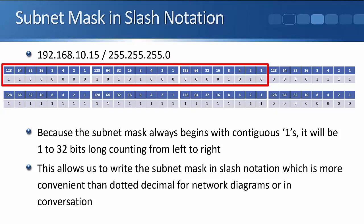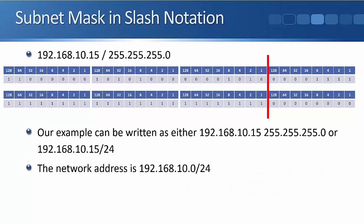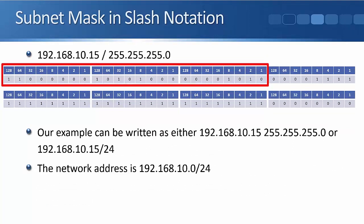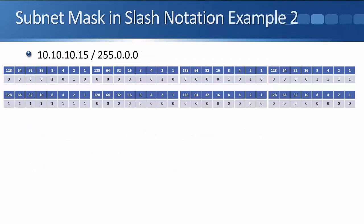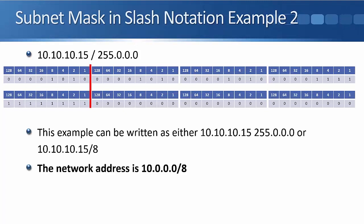The network portion for a slash 24 was highlighted. Now let's look at another example: for IP address 10.10.10.15 with subnet mask 255.0.0.0 — hopefully you can see just by looking at this that it's going to be a slash 8. The more you work with IP addresses and subnets, the more quickly you'll see where the lines are. So that address can be written as 10.10.10.15 255.0.0.0, or 10.10.10.15/8.